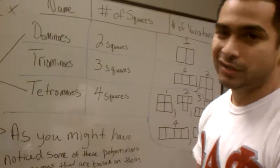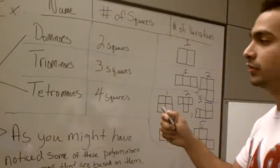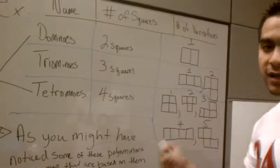What I've done here is I've made a little grid with the different number of squares and the different names of them, and how many variations they have.